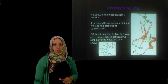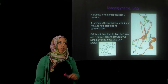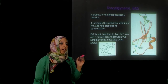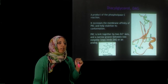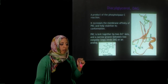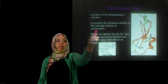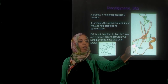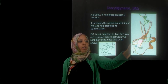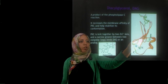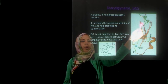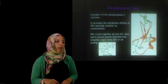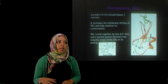Diacylglycerol, or DAG, is formed from the hydrolysis of PIP2 into DAG and IP3. DAG helps anchor protein kinase C into the membrane, stabilizing its conformation. Protein kinase C has two zinc-binding domains, and between those two zinc-binding domains there is a loop where DAG specifically binds, helping anchor protein kinase C into the membrane and stabilizing its conformation.